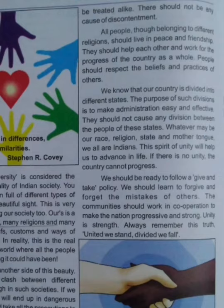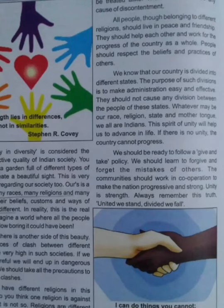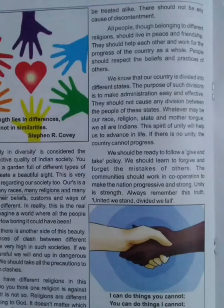We should be ready to follow a give-and-take policy. We should learn to forgive and forget the mistakes of others. Whenever there are problems or clashes in our life or in society, we must be ready to follow these values — forgive and forget. The community should work in cooperation to make the nation progressive and strong. Unity is strength — always remember this truth.